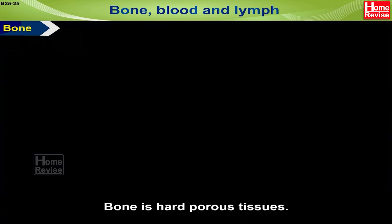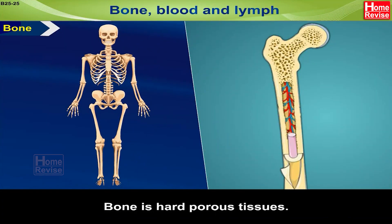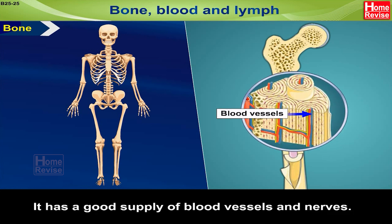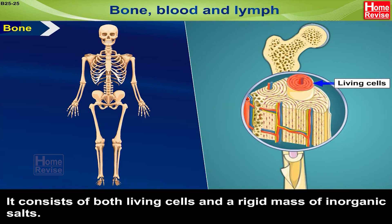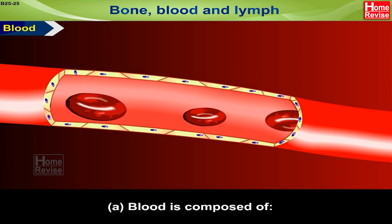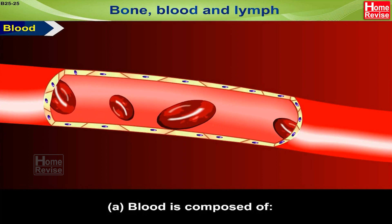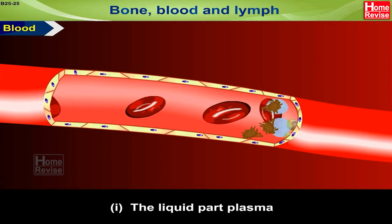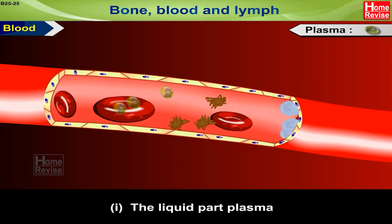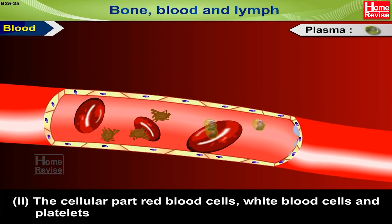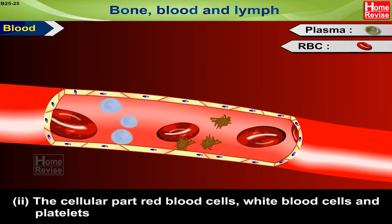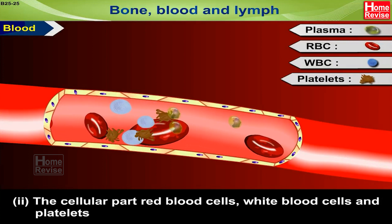Bone is a hard, porous tissue. It has a good supply of blood vessels and nerves and consists of both living cells and a rigid mass of inorganic salts. Blood is composed of first the liquid part — plasma — and second the cellular part: red blood cells, white blood cells and platelets.